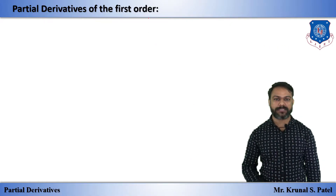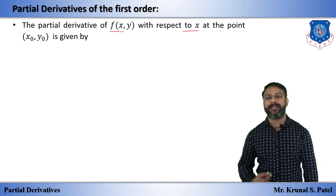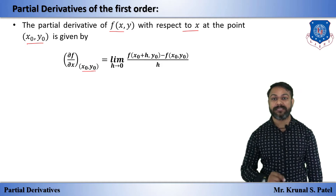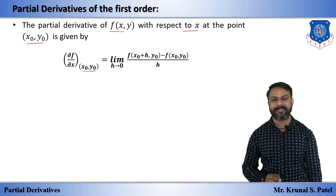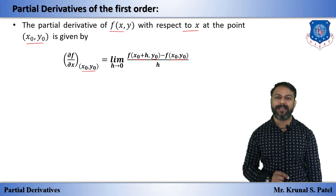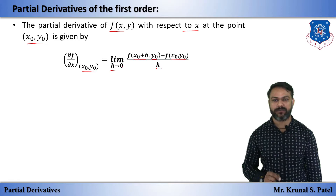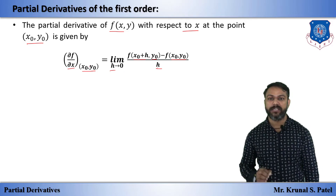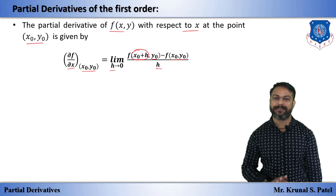Now the formal definition: the partial derivative of f(x, y) with respect to x at point (x₀, y₀) is given by del f / del x at (x₀, y₀) = limit as h tends to 0 of [f(x₀ + h, y₀) − f(x₀, y₀)] / h. Note that since we differentiate with respect to x, the change appears in x only — so x₀ becomes x₀ + h while y₀ stays the same.